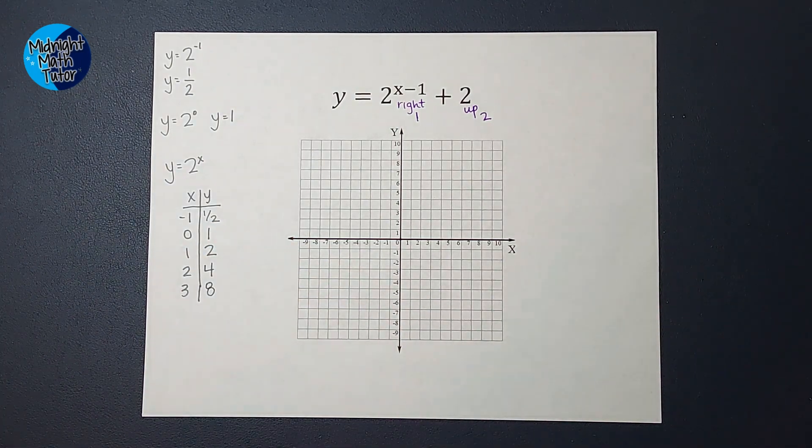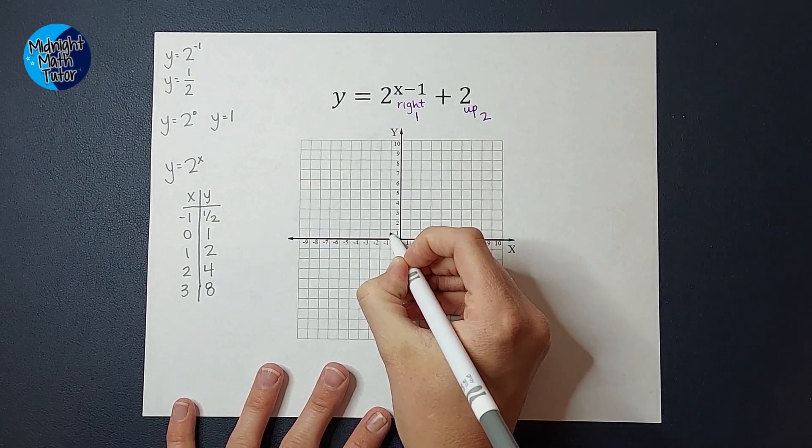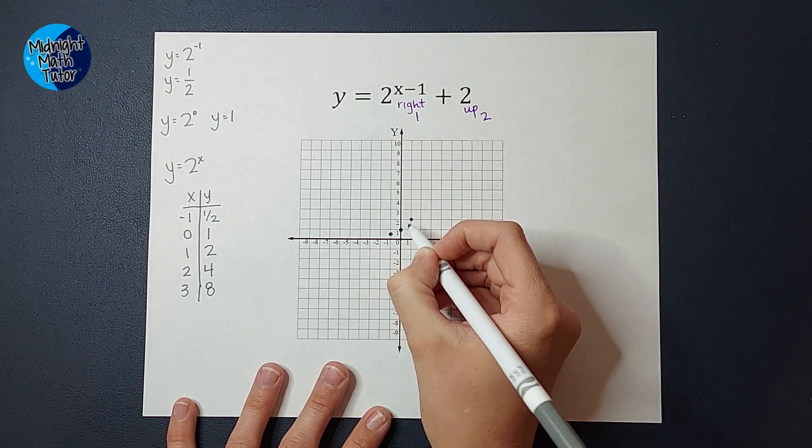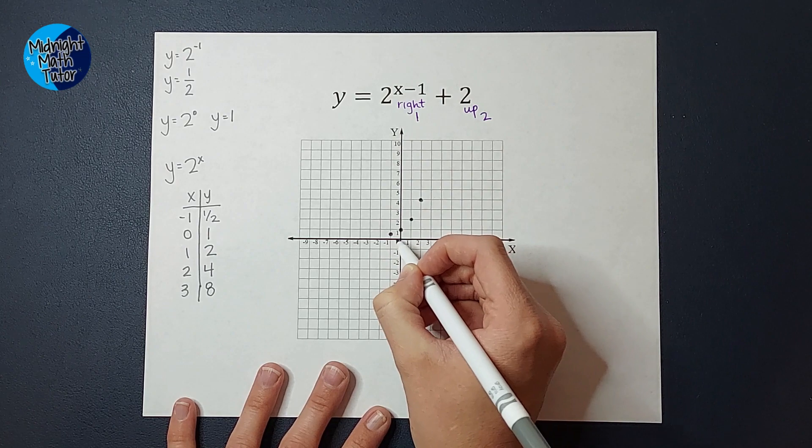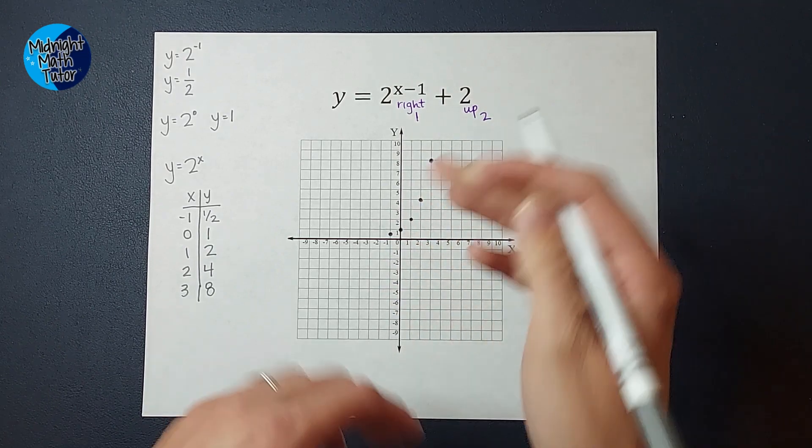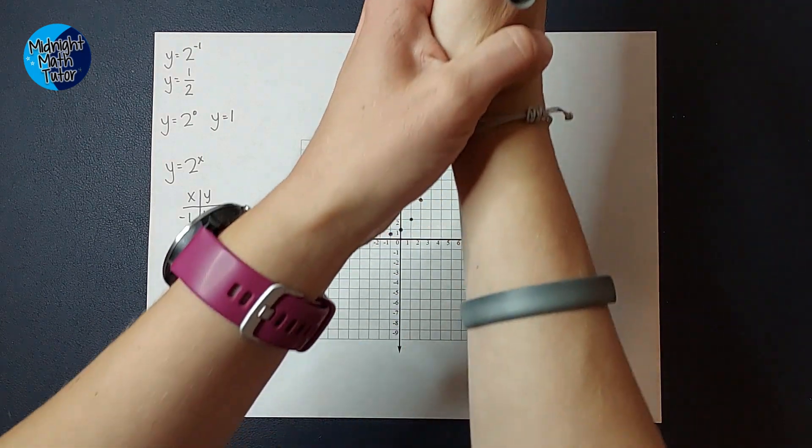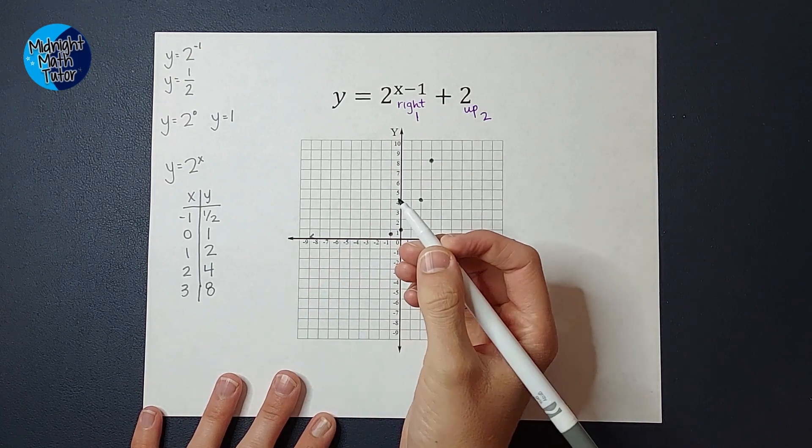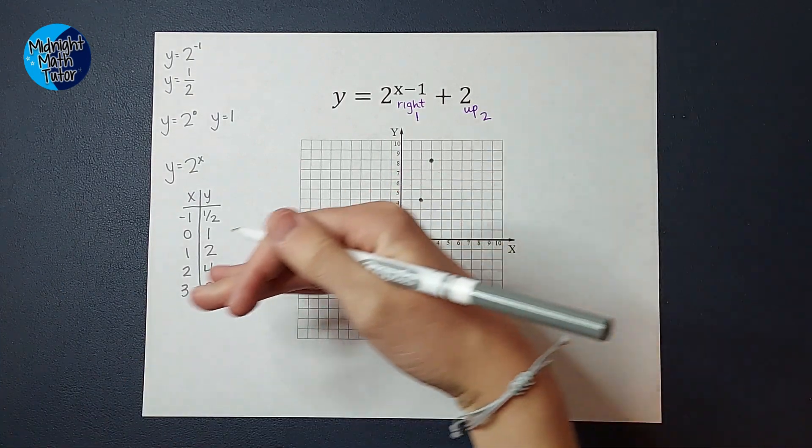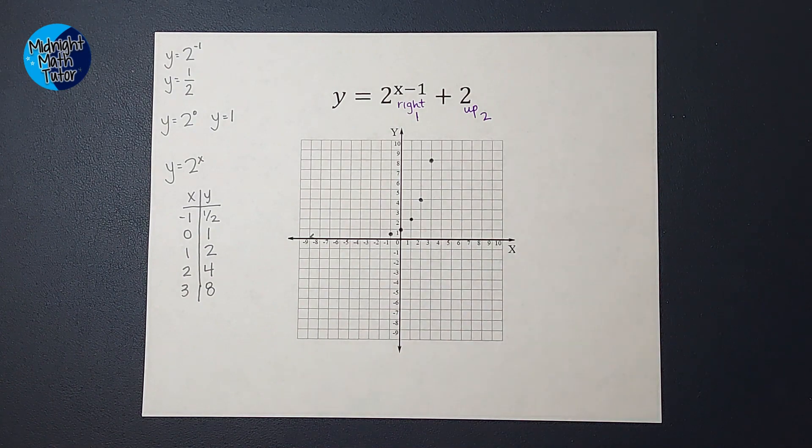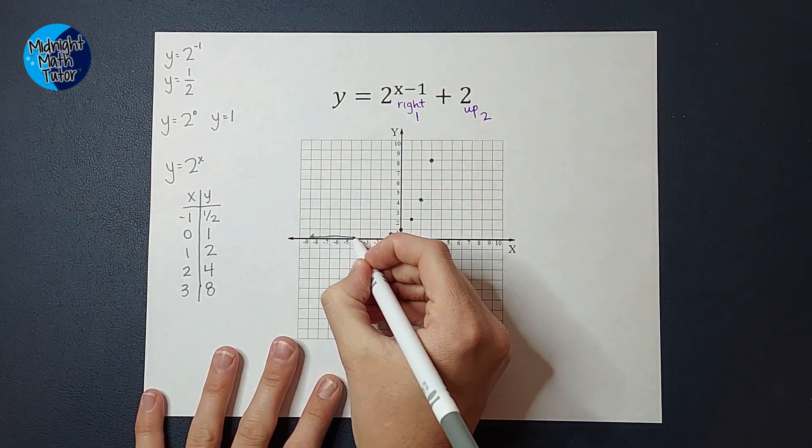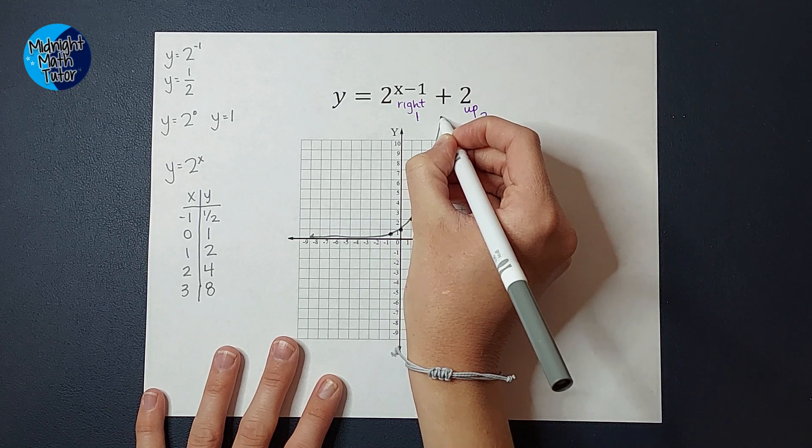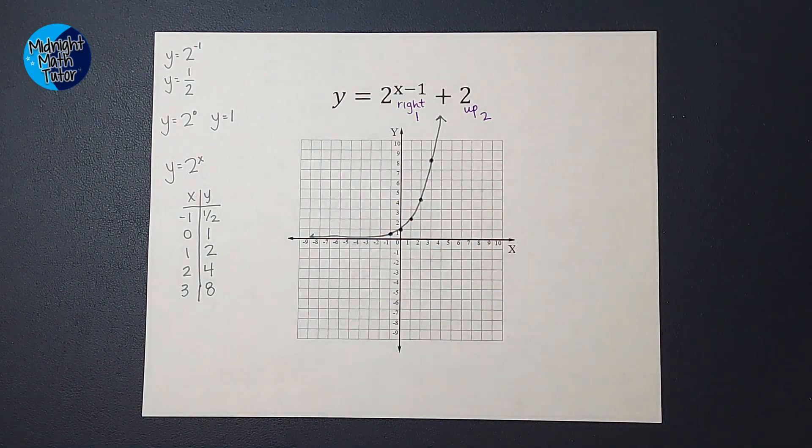So let's go ahead and graph these points and see what this parent graph looks like. So I've got negative 1 and 1 half, I've got 0, 1, 1, 2, 2, 4, and 3, 8. So what I'm noticing about this graph is that it's getting steep very quickly. I also noticed that this graph is getting closer and closer and closer to 0, but it will never actually touch it. So it's going to keep getting closer, but never touch it, and then it's going to keep getting steeper. So that is my parent graph.